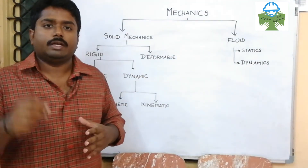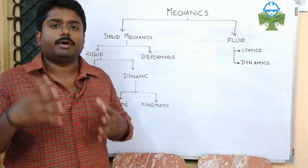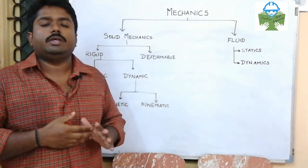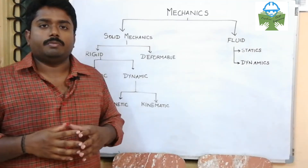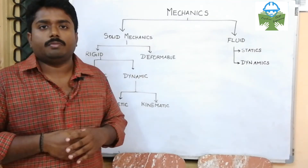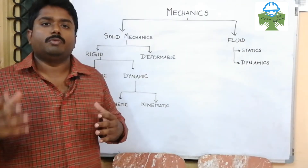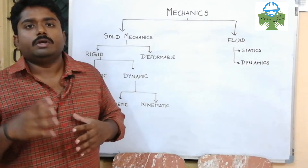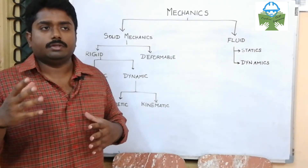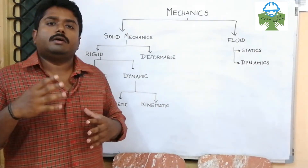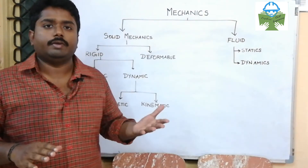The second module is the equilibrium of a rigid body, covering moment and couple. The third module covers properties of surfaces, such as moment of inertia and center of gravity.